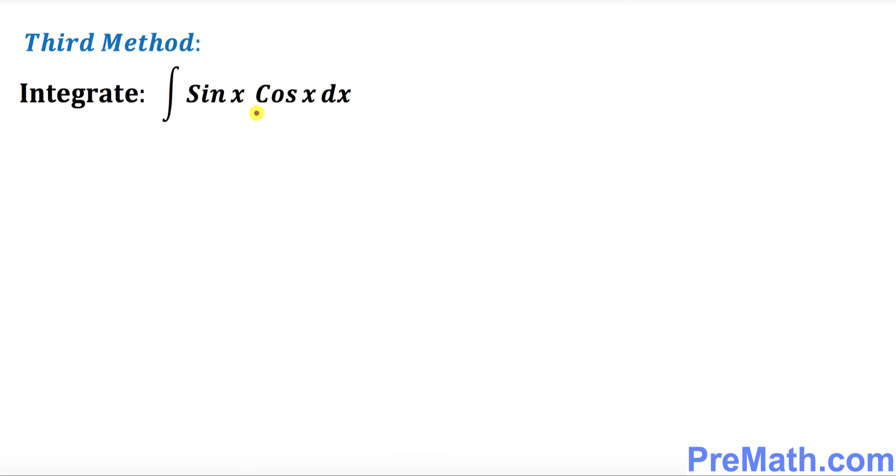And finally in this method we will be using our double angle formula to solve this problem. So this is our double angle formula: sine of 2x equal to 2 sine of x cosine of x. What if we divide both sides by 2, then what happens? So I'm going to divide this side by 2 and this side by 2, we get sine of x times cosine of x turns out to be sine of 2x divided by 2.